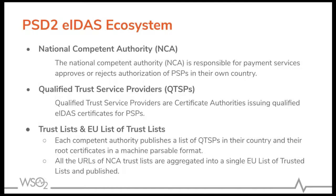Now we can talk about the PSD2 eIDAS ecosystem. It has a National Competent Authority (NCA), which is the authority responsible for registering third-party providers (TPPs) within each country. There is an NCA for every country in the European region. They are responsible for registering TPPs within their country and maintaining their registration status. The NCA maintains a registry containing TPP authorization information and the roles assigned to each particular TPP.